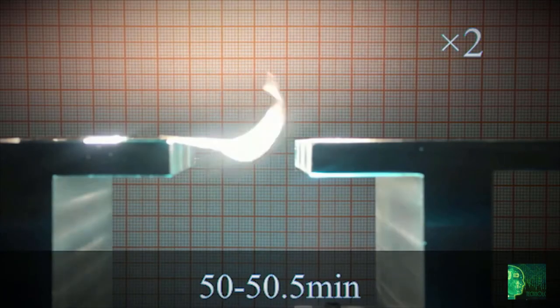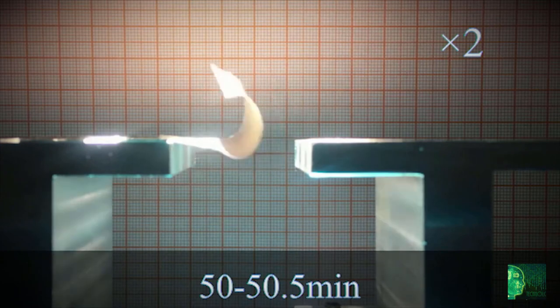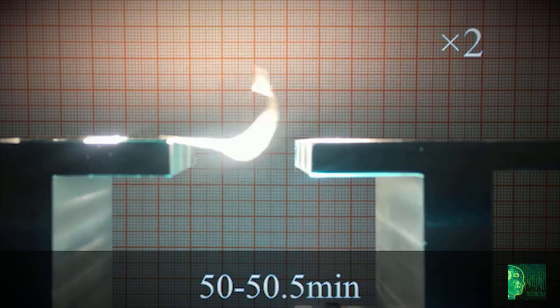Then, the curved part of the wing shaded itself, causing the temperature to drop and the strip to unfold. Continuous cycles of bending and unfolding produced a flapping motion.